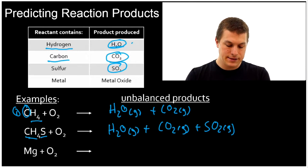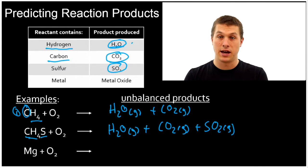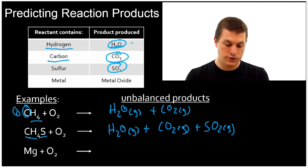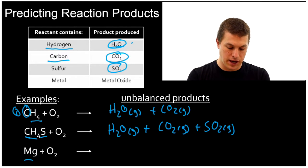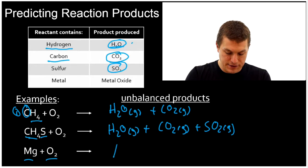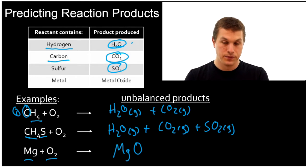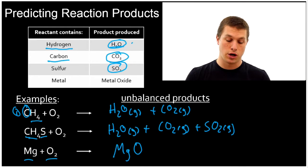All right, last example here. Again, we need to go through and balance those reactions before this will be complete. But I'm just going through quickly to show you how to use the chart. Last sort of quick example here is magnesium combining with oxygen, the example I mentioned before. So here we're going to get magnesium and oxygen, a metal oxide.